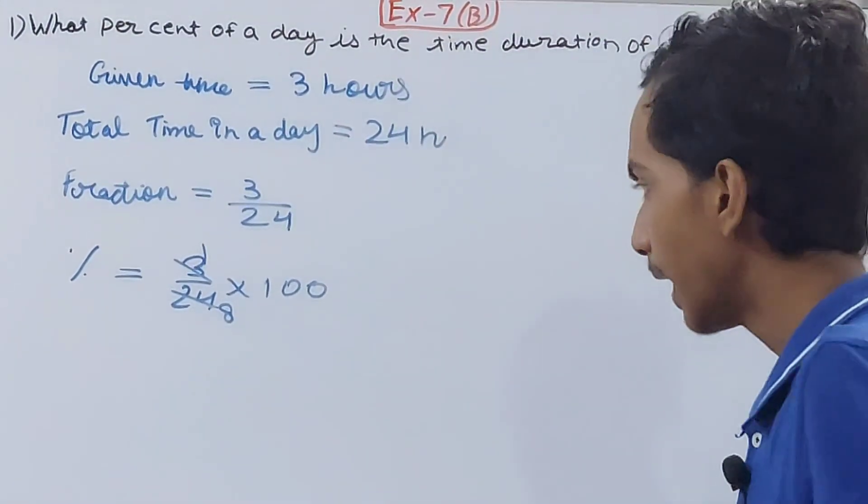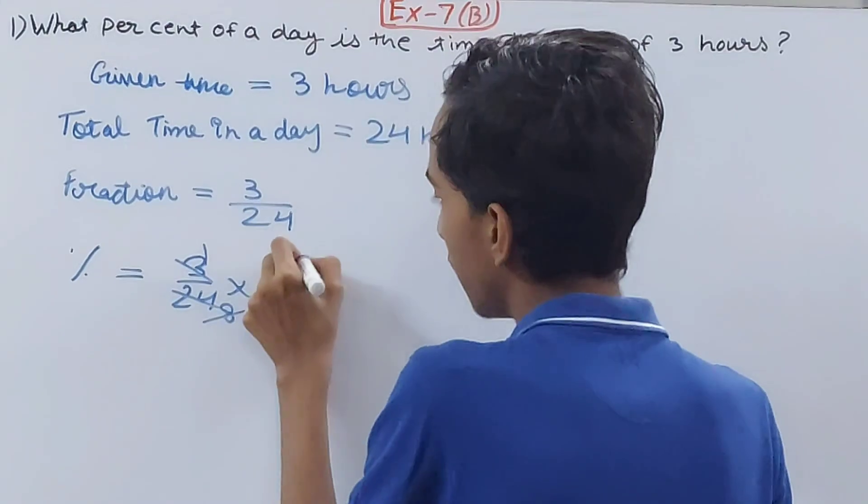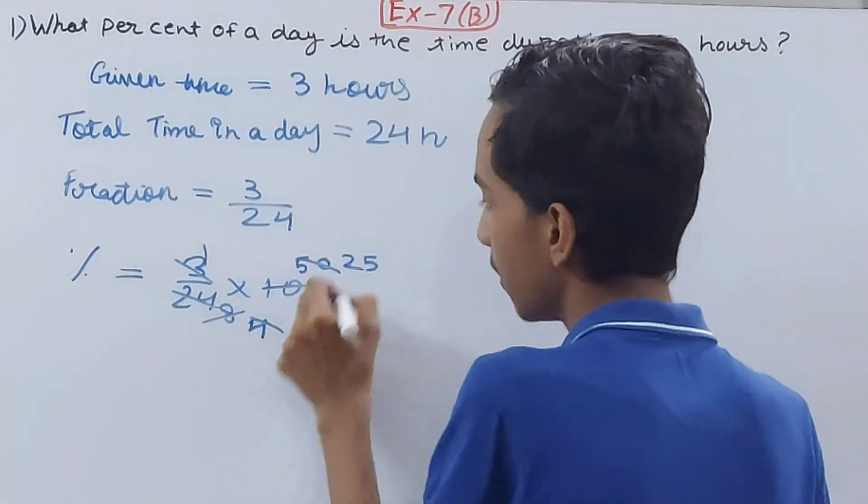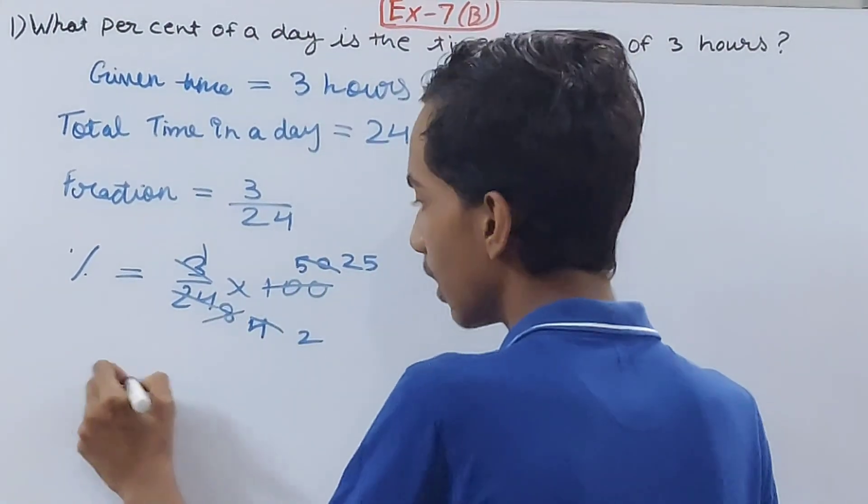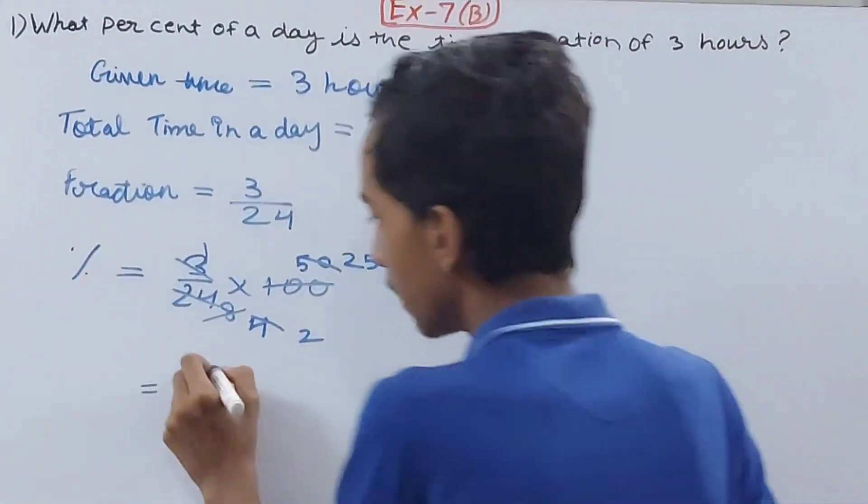1 and 8, 3 and 24 will cancel, so 1 and 8, and then 8 and 100 here, so 4 and 50. This will go 25 times, this will go 2 times. We are canceling everything here by 2.